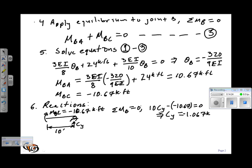Now that we have that reaction, we can go back to the global equilibrium. CY is equal to negative 1.067 kips, and we still have a distributed load of 3 kips per foot. And so when we apply equilibrium here, I have AY and AX.